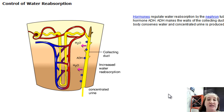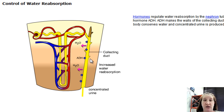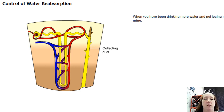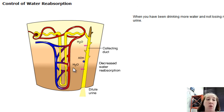ADH stands for anti-diuretic hormone. A diuretic is something that causes you to lose water, so this hormone causes you to keep water. ADH opens up aquaporins along the entire collecting duct, and because of the difference in concentration, water flows out of the urine by osmosis back into the blood. That's why if you're dehydrated, your urine is more yellow and more concentrated — there's less water in it. When you've been drinking more water, the blood becomes more dilute, the brain decreases ADH secretion, the collecting duct becomes less permeable, and less water is reabsorbed — producing dilute urine.